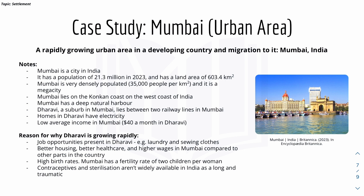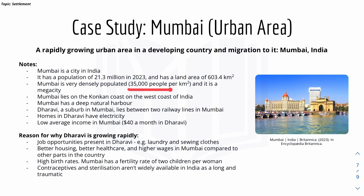Now for the case study: a rapidly growing urban area in a developing country — Mumbai in India. Mumbai has a population of 21.3 million in 2023 and a land area of 603.4 km², making it very densely populated at around 35,000 people per km². We'll focus on the suburb of Dharavi, which lies between two railway lines in Mumbai.